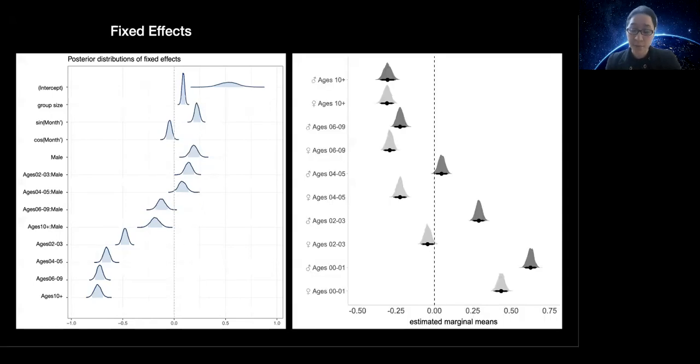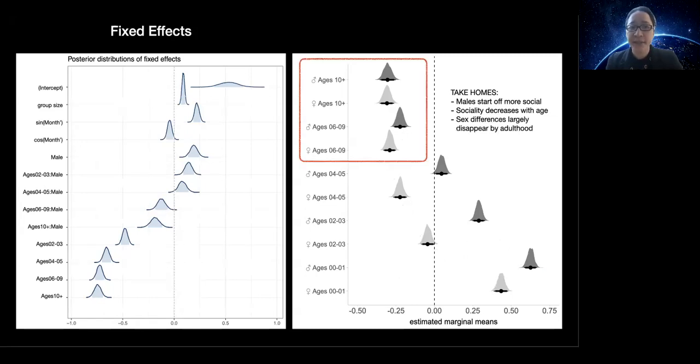The interaction between age and sex also had an effect on sociality. If we plot the estimated marginal means for age and sex separately, we can more easily see a few take home points. One, male infants start off more social than their female counterparts. Two, sociality decreases with age. And three, sex differences largely disappear by adulthood.